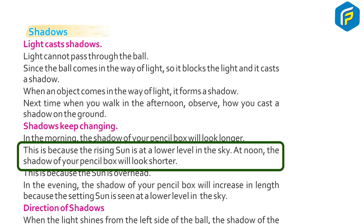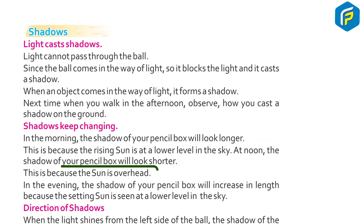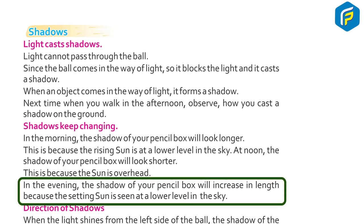At noon, the shadow of your pencil box will look shorter. This is because the Sun is overhead. In the evening, the shadow of your pencil box will increase in length because the setting Sun is seen at a lower level in the sky.